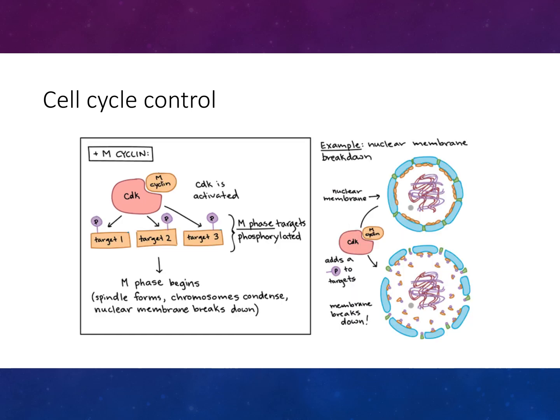You can also see with the M cyclin, how the CDK binds to the cyclin and CDK is activated. The M phase targets are phosphorylated, resulting in the M phase beginning — spindles form, chromosomes condense, and the nuclear membrane breaks down.